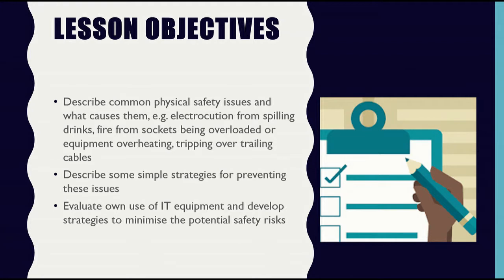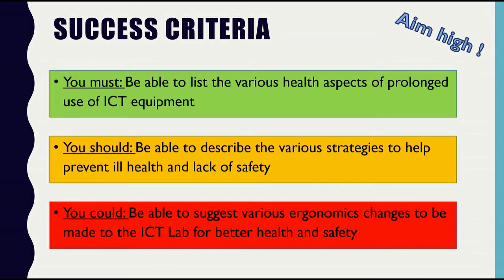In this lesson the objectives we are trying to cover are as follows. We are going to describe some common physical safety issues and what causes them. We will describe some simple strategies for preventing these issues and we will also evaluate our own use of ICT equipment and think of strategies that can minimize safety risks. As a success criteria, you must be able to list the various health aspects of prolonged use of ICT, describe the various strategies that help prevent it, and as an extension suggest ergonomic changes to the ICT lab for better health and safety.